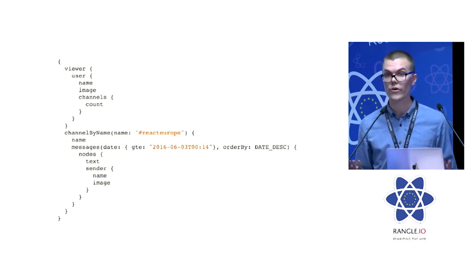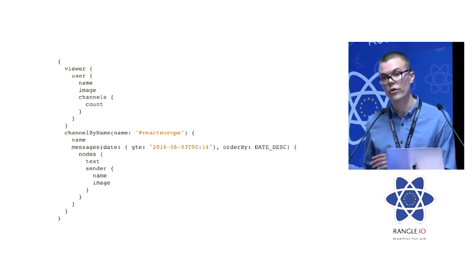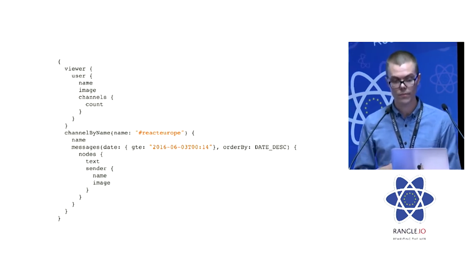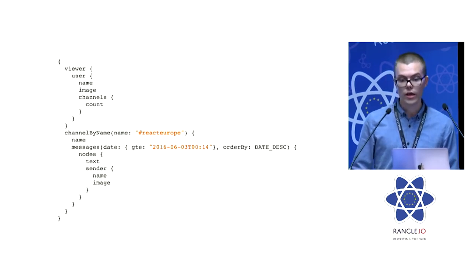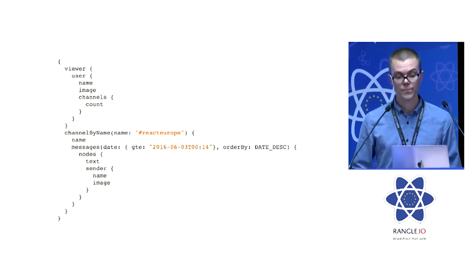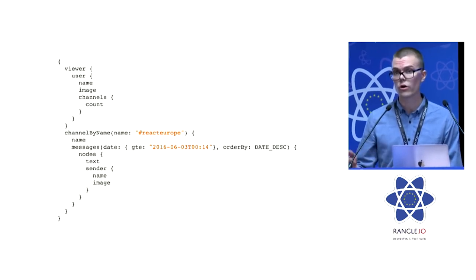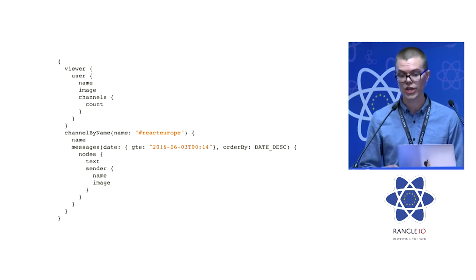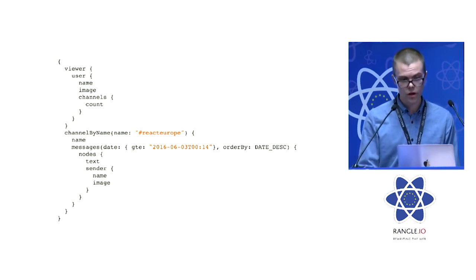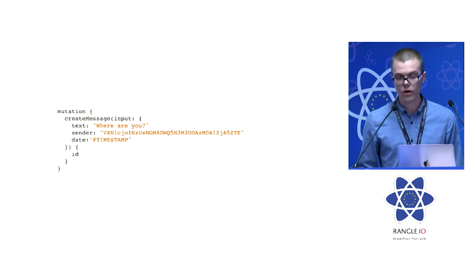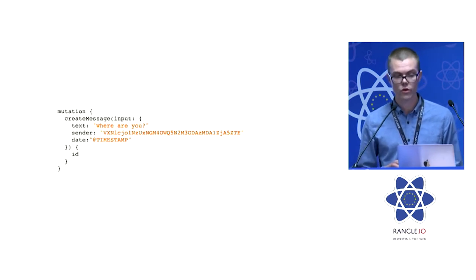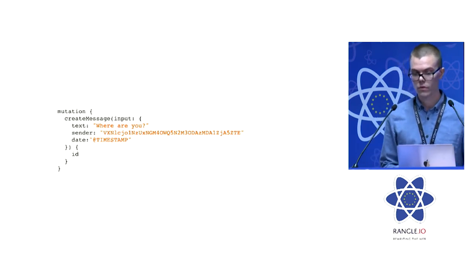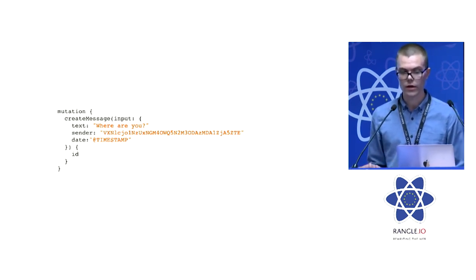It creates storage in the cloud database for the data and creates a GraphQL API automatically from the data model. Then we can start querying the GraphQL server that was just deployed for us. It supports all the things like filtering the data, sorting it, and all the collections are automatically paginated with relay-compatible pagination. We also have mutations.